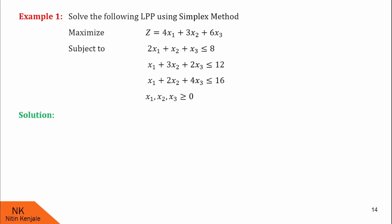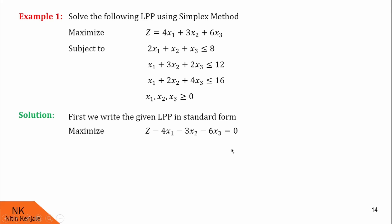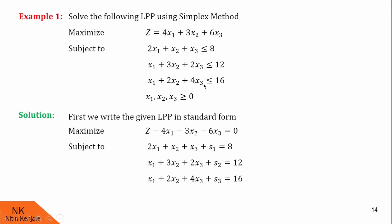In step 1, we have to convert this given LPP into standard form. The first characteristic of standard form is the objective function has to be of the type Maximize, and it is of that type here. Taking all right-side terms to LHS, the objective function becomes z minus 4x1 minus 3x2 minus 6x3 equals 0. We add slack variables s1, s2, and s3 to make the constraints equalities. Finally, x1, x2, x3, s1, s2, s3 are all greater than or equal to 0.